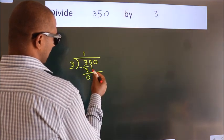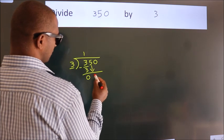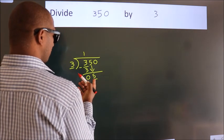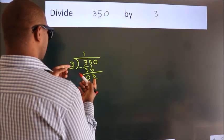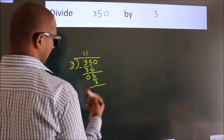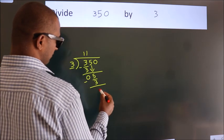After this, bring down the beside number, so 5 down, so 5. A number close to 5 in 3 table is 3 once, 3. Now, we subtract, we get 2.